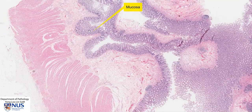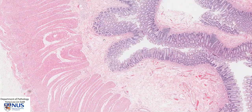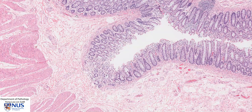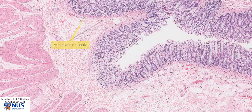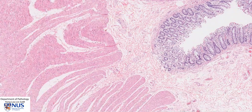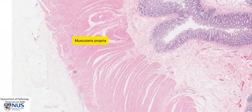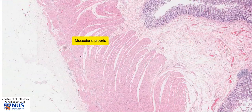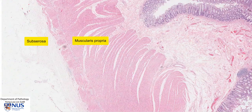This is the mucosa. Just below this is a very thin layer of smooth muscle known as the muscularis mucosae. And then we have the submucosa, which is composed of loose connective tissue. And then we have the muscularis propria, the thick muscle coating, and the subserosal tissue.